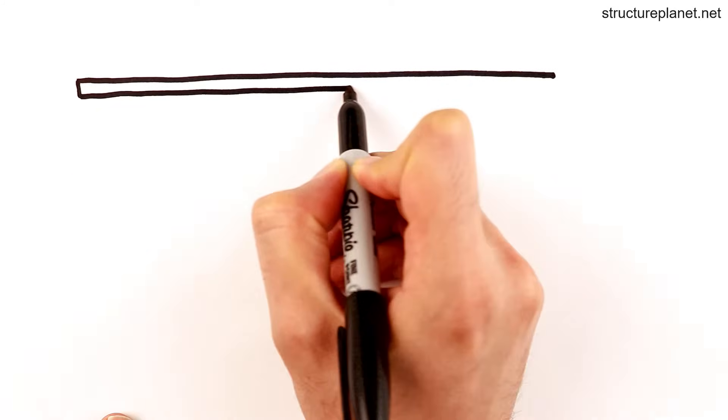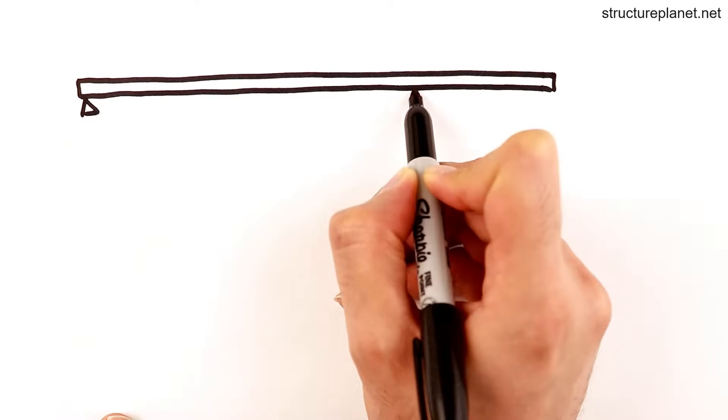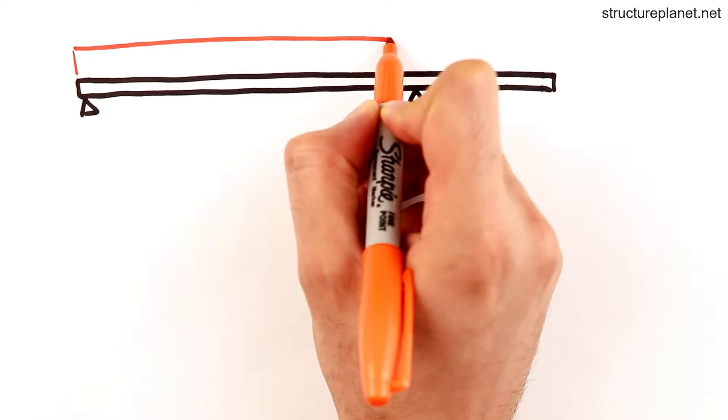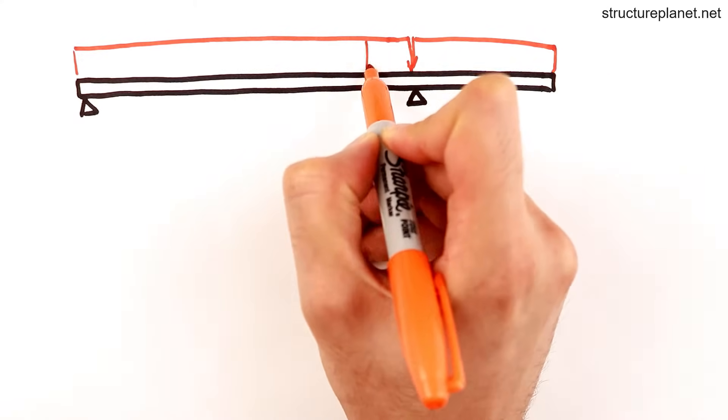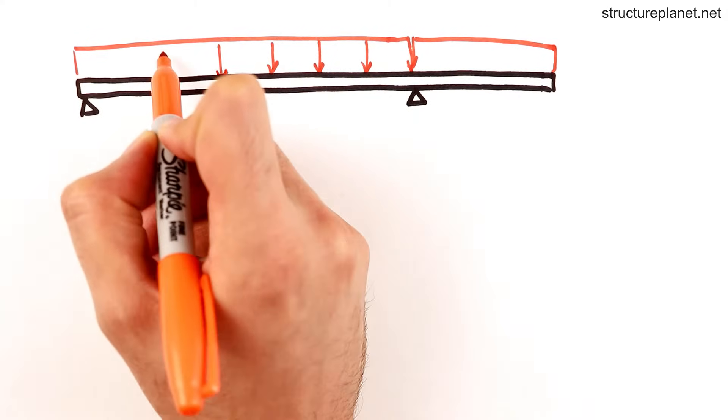So how do engineers deal with cantilevers? Well, often times we can use the backspan members to reduce the cantilever deflection. Cantilevers with a backspan is much easier to design.